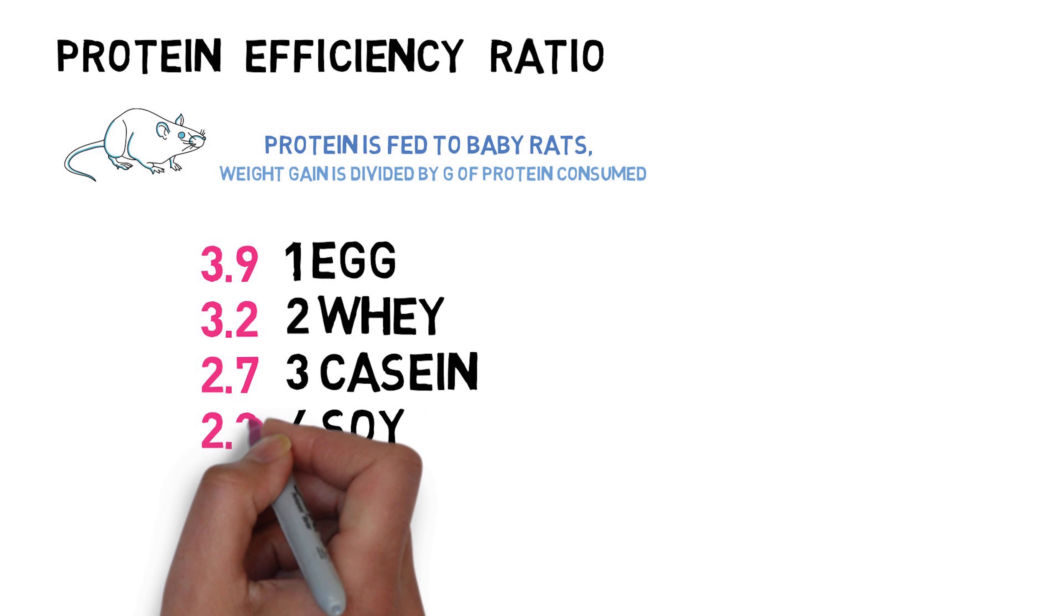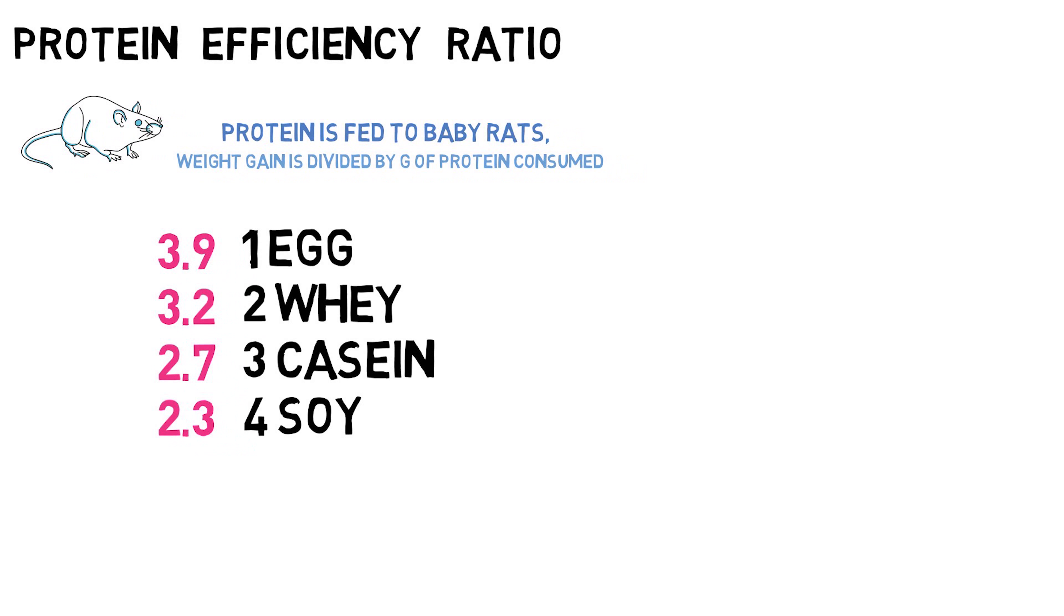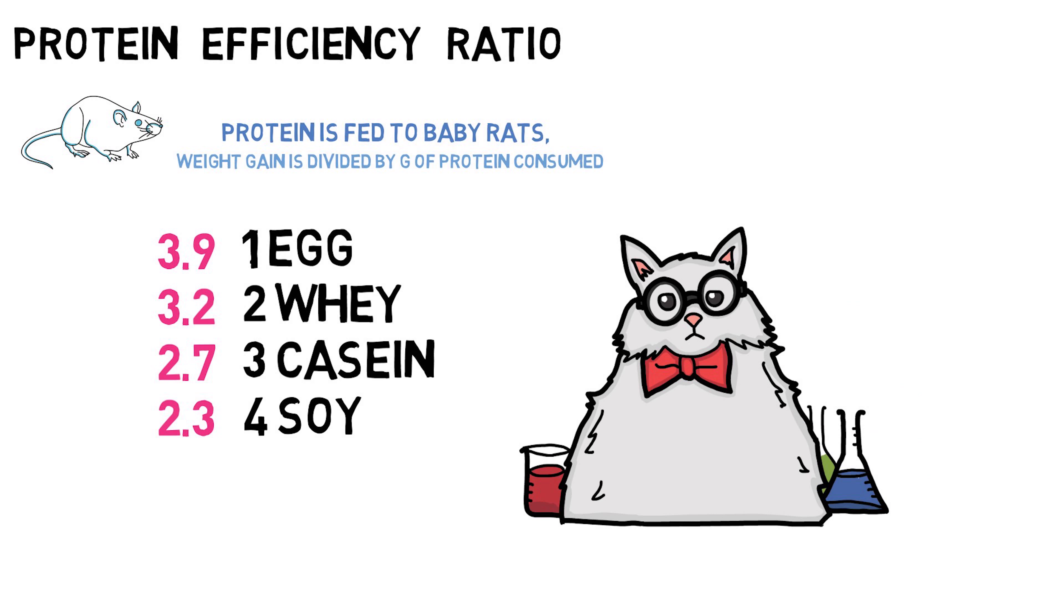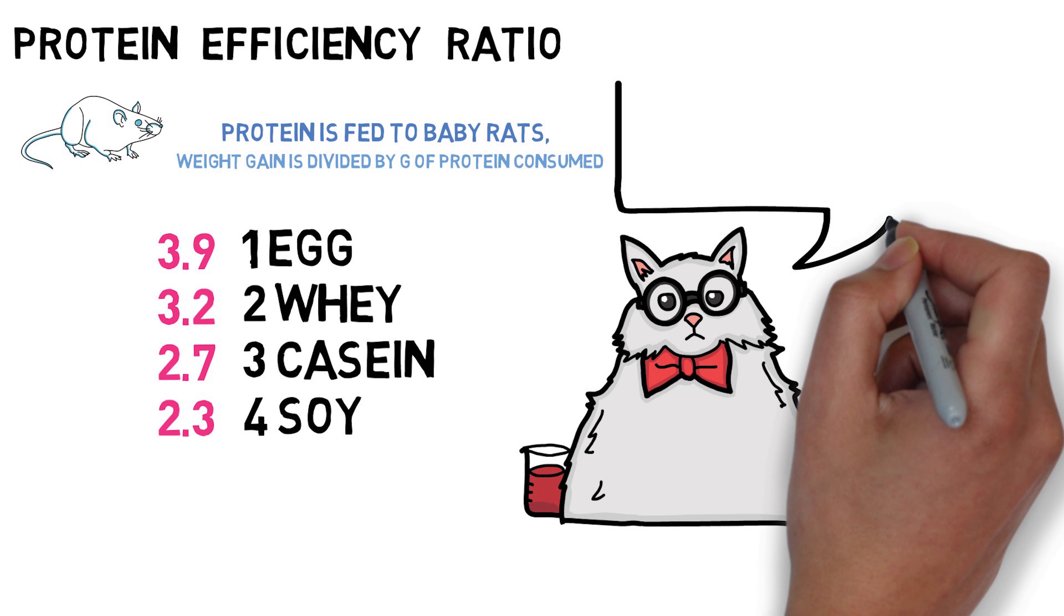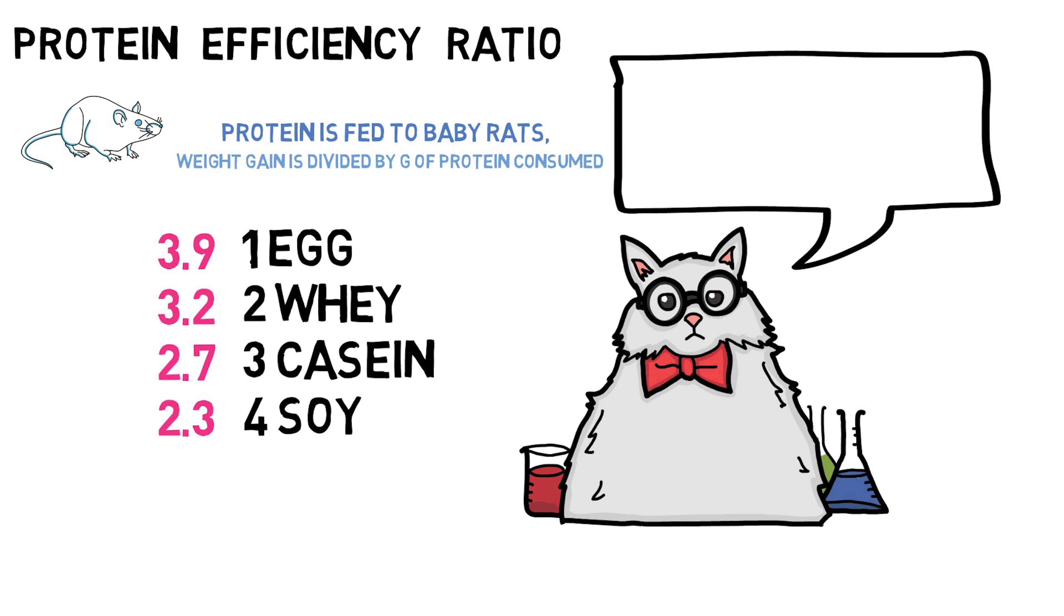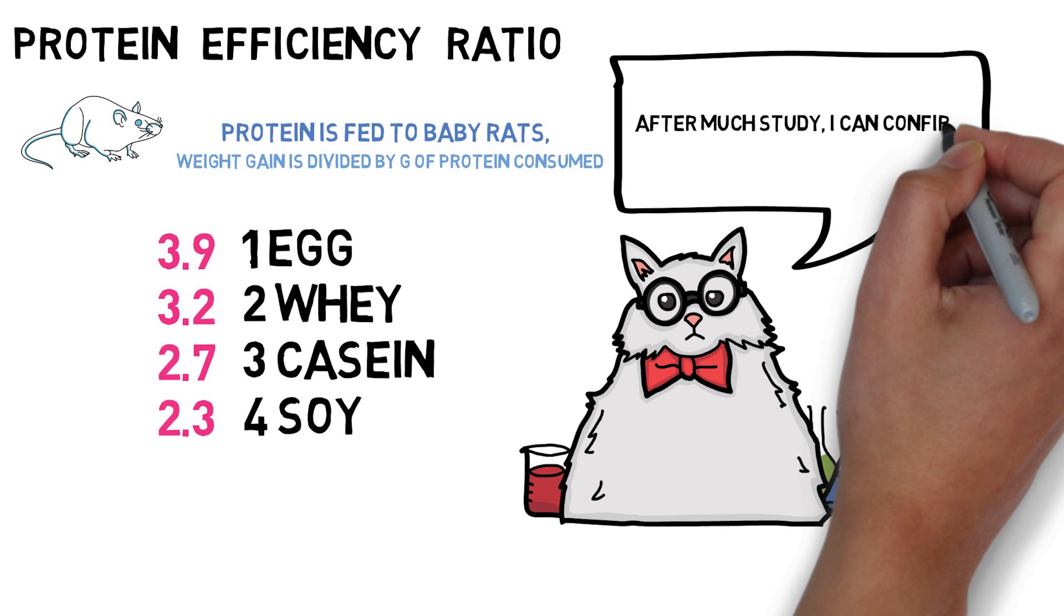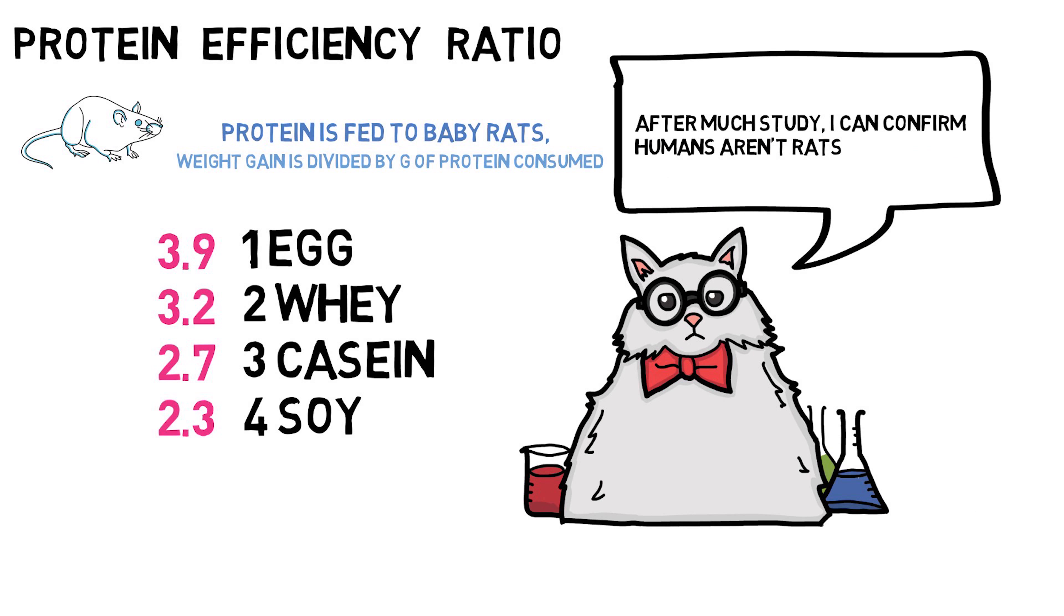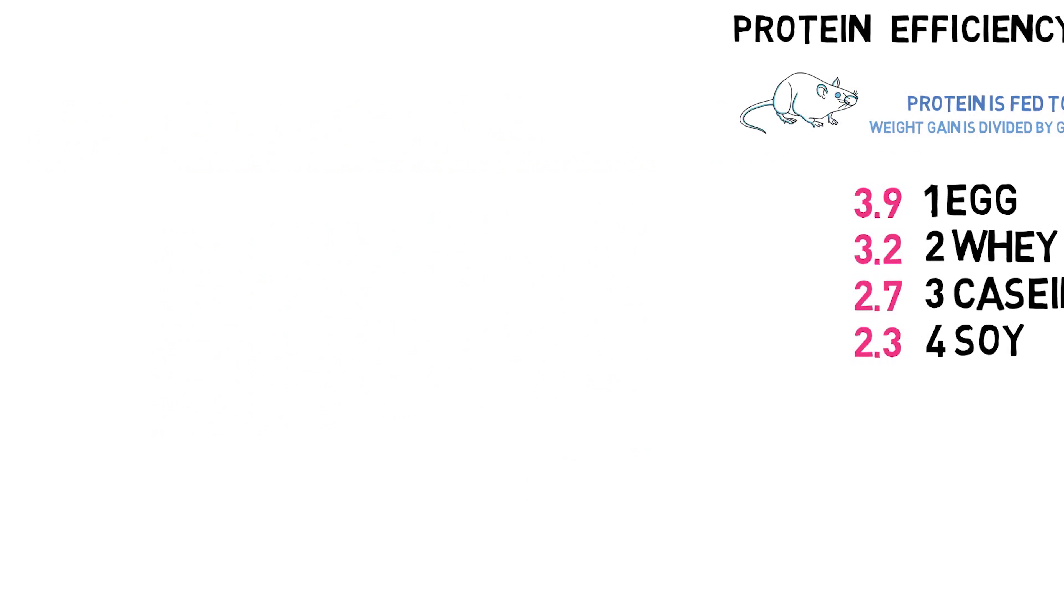But as time went on, more issues arose due to the fact that humans and rats are different. This is perfectly illustrated by the fact that human milk actually performed poorly on this test, which makes sense considering human milk contains just 8.5 grams of amino acids per liter. Rat milk contains 86.9 grams. That's four times more than cow's milk.